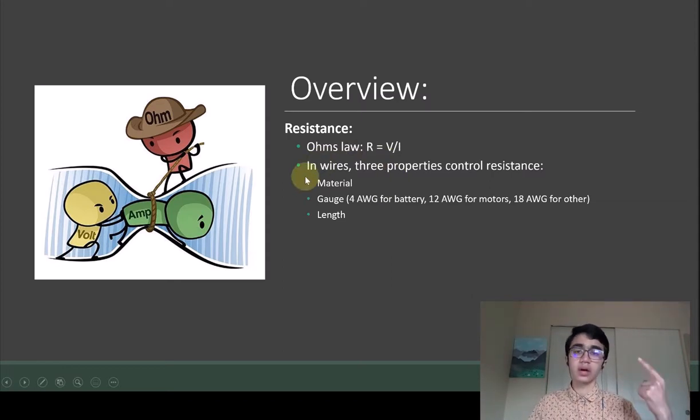The way resistance is determined in wires is first of all with the material, the gauge - we remember we use 4 gauge for battery, 12 gauge for motors, and 18 gauge for all the other connections.